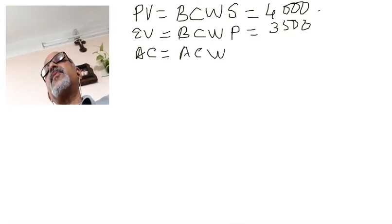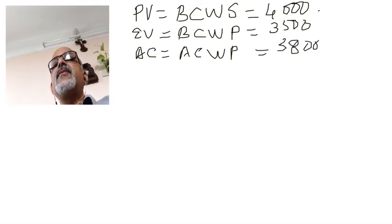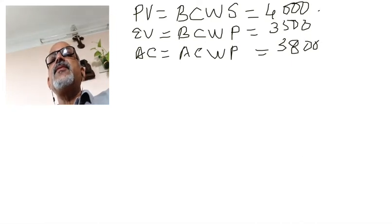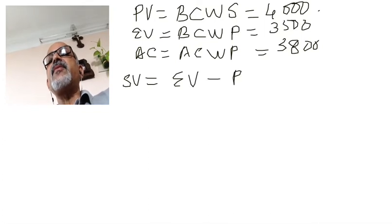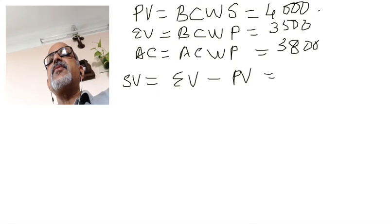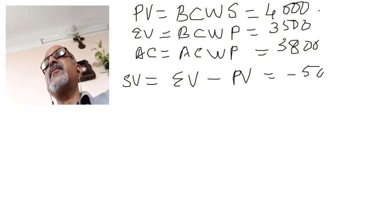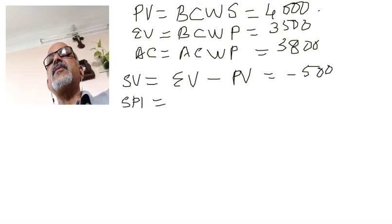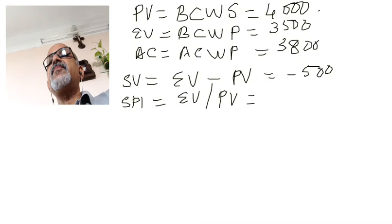We have the formula: Schedule Variance (SV) = Earned Value minus Plan Value. In this case, SV = $3,500 − $4,000 = −$500, which means we are lagging behind schedule. Schedule Performance Index (SPI) = Earned Value divided by Plan Value = $3,500 / $4,000, which is less than one.